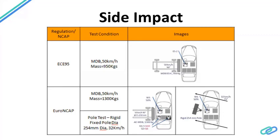Euro NCAP also uses an MDB barrier for side crash testing, with the same velocity of 50 km/h but a higher barrier mass. When the mass increases, the impact energy increases, making the crash more severe and complicated. This is a key difference between the ECE R95 regulation and the Euro NCAP side crash test.